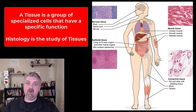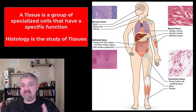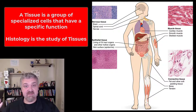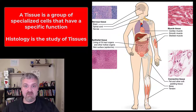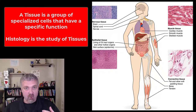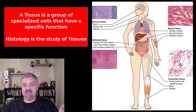But for the human body to work correctly, our cells have to work together, and that's where tissues come into play. A tissue is when you take a group of specialized cells that have a specific function. The study of these tissues is called histology. Later, we'll see how when you put tissues together, you form organs and organ systems and the whole human organism.